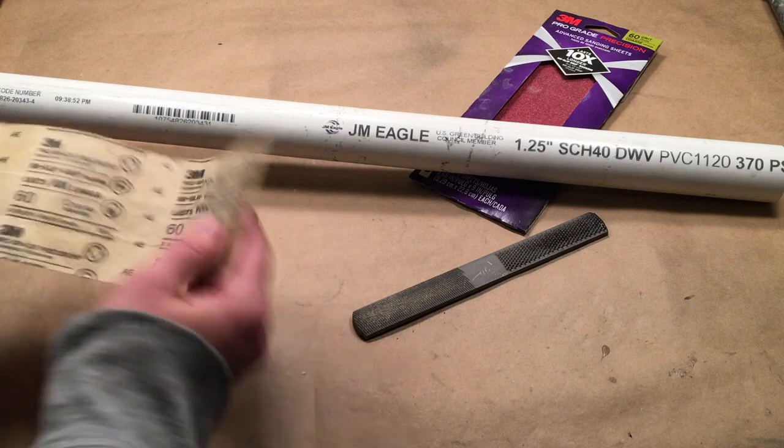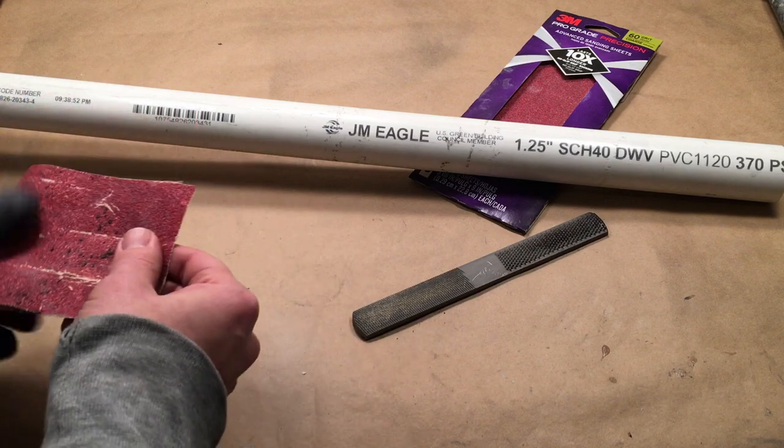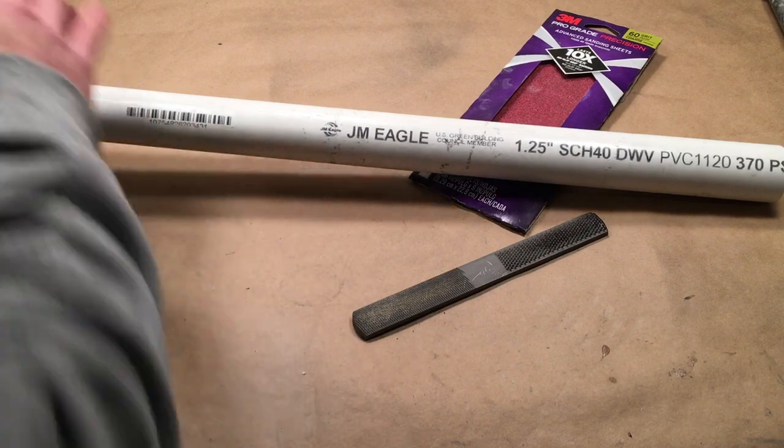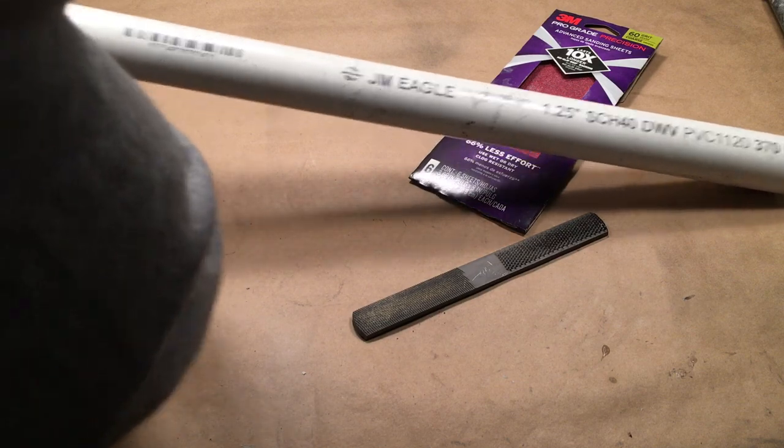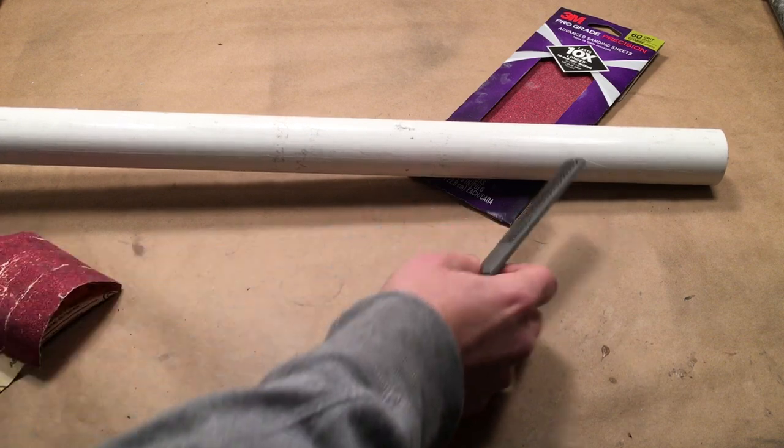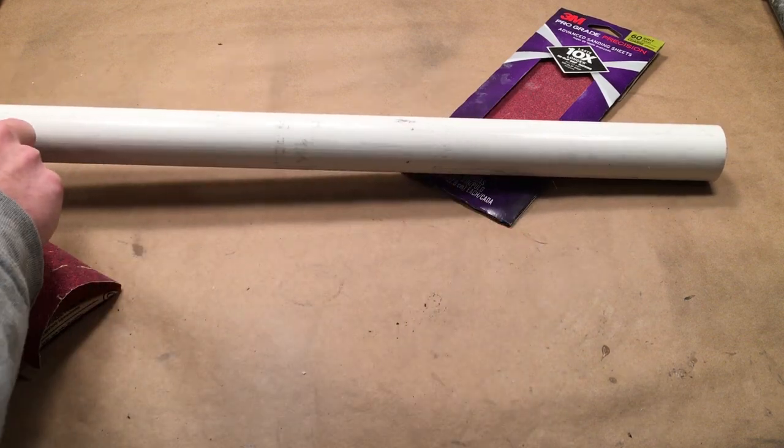Now that the joint is sanded down, we'll rough up the entire one and a quarter inch pipe to simulate wood grain and wear. Sand top to bottom with 60 grit sandpaper to make some ridges in the pipe. To really get some deep ridges, use a rasp. Rough up the funnel too.